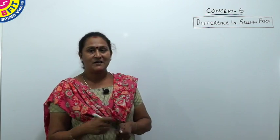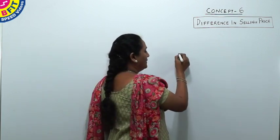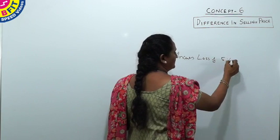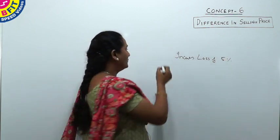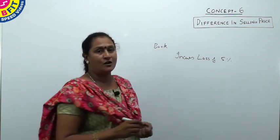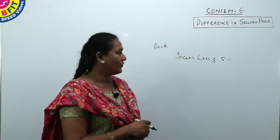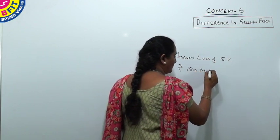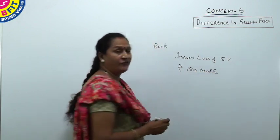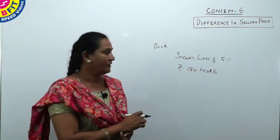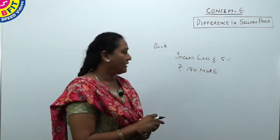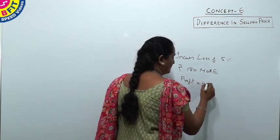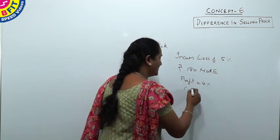For example, a person sells a book and incurs a loss of 5%. If he had sold it for 180 rupees more, he would have got 4% profit. So what is the cost price?